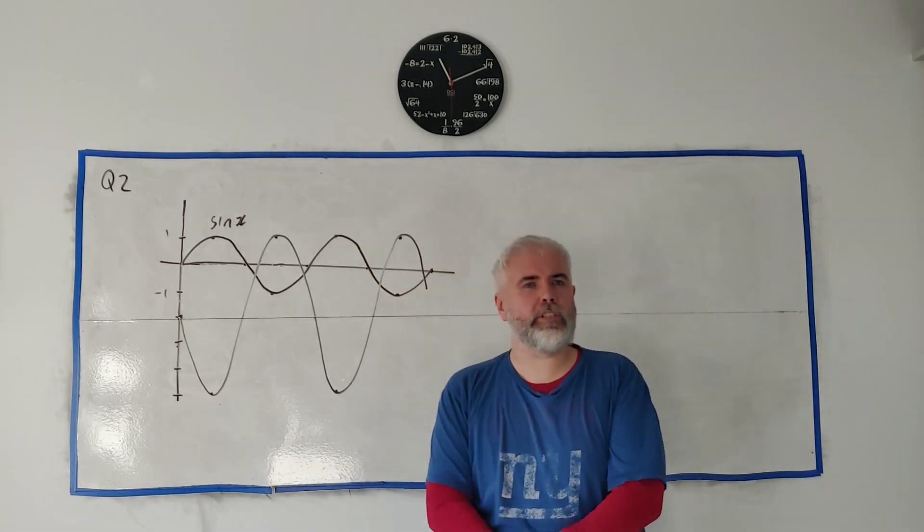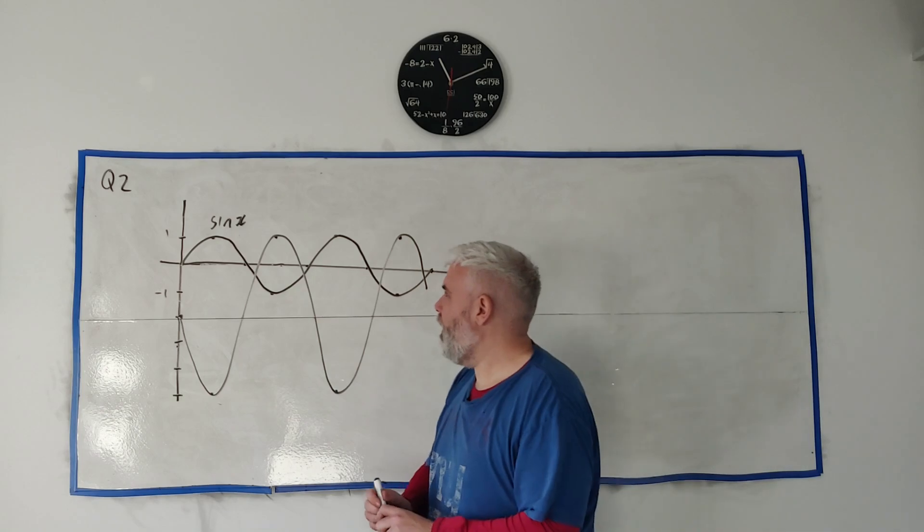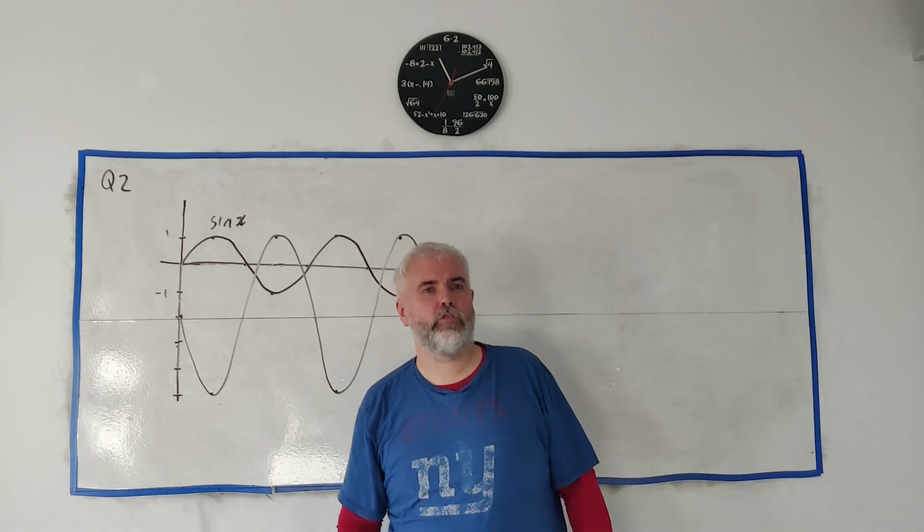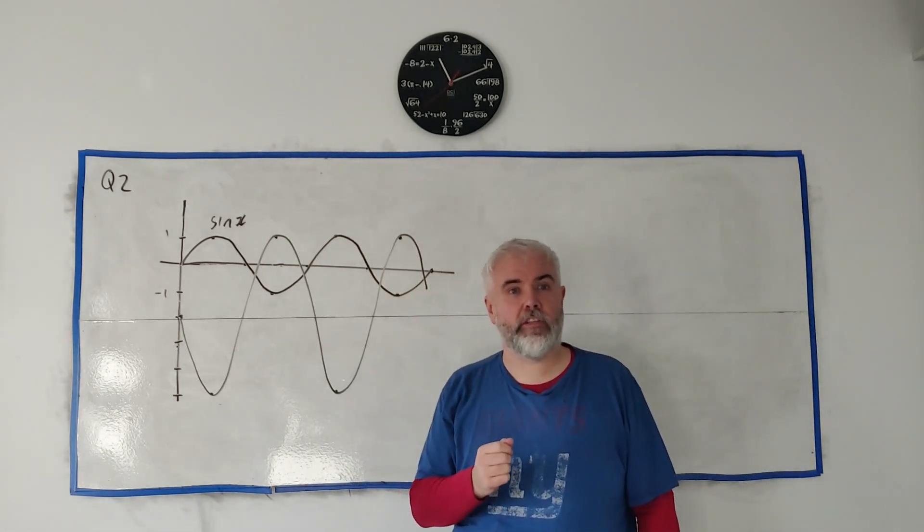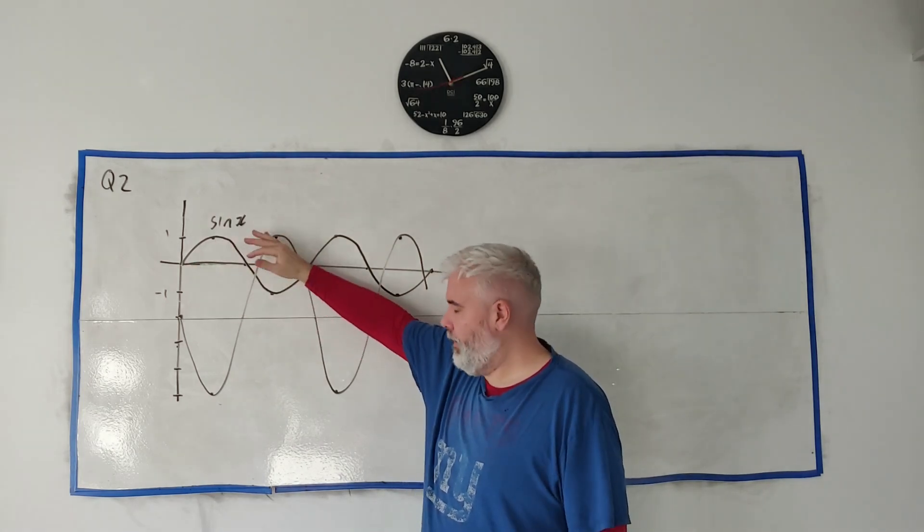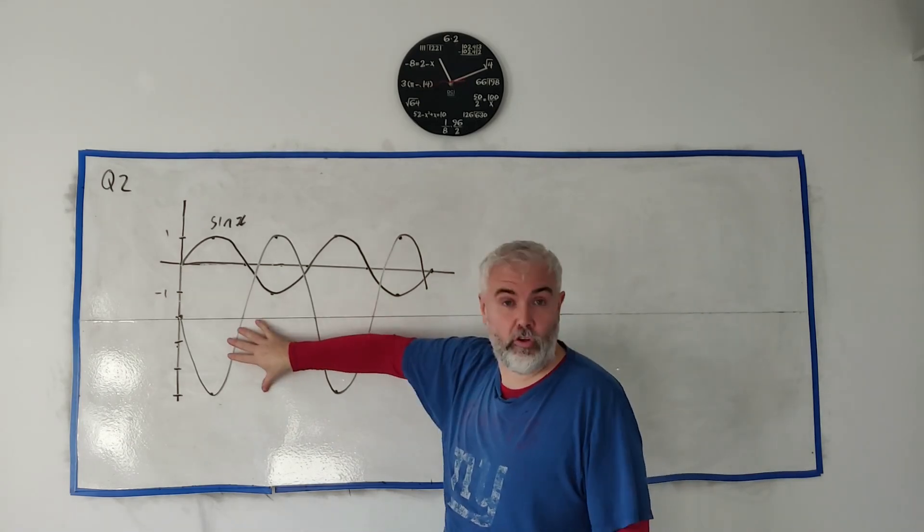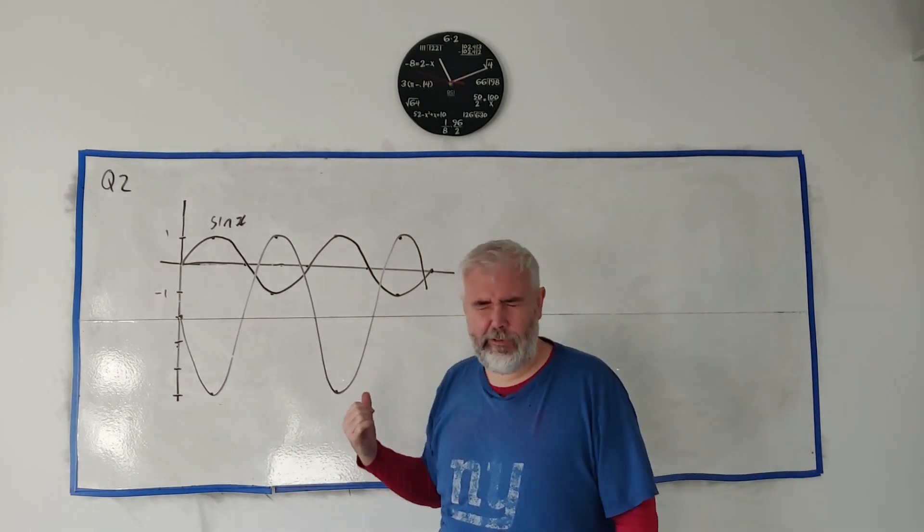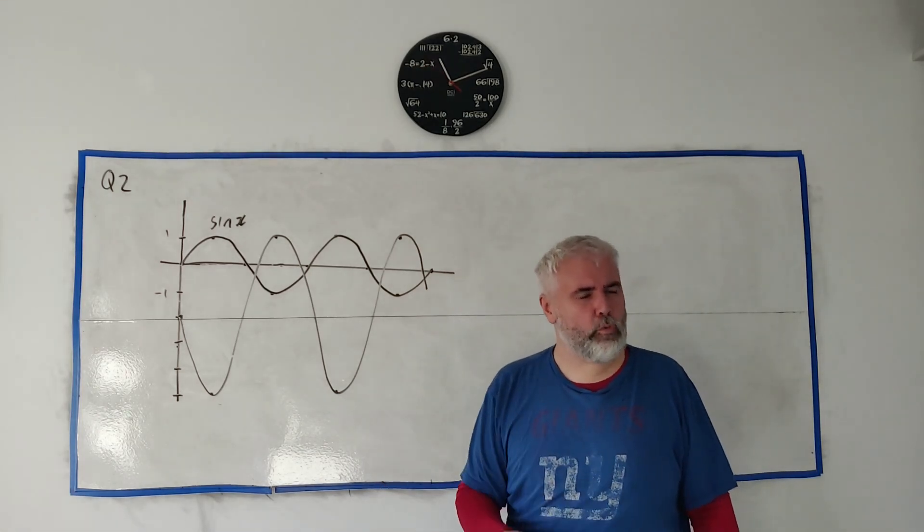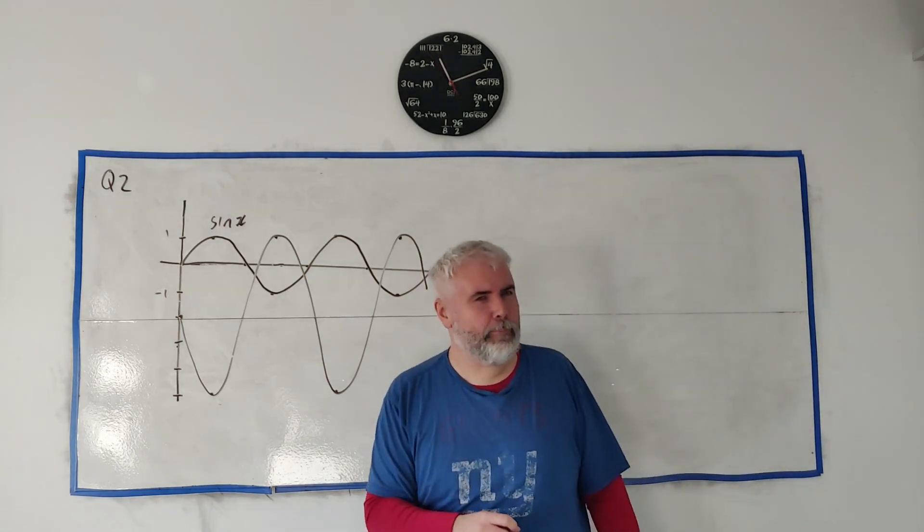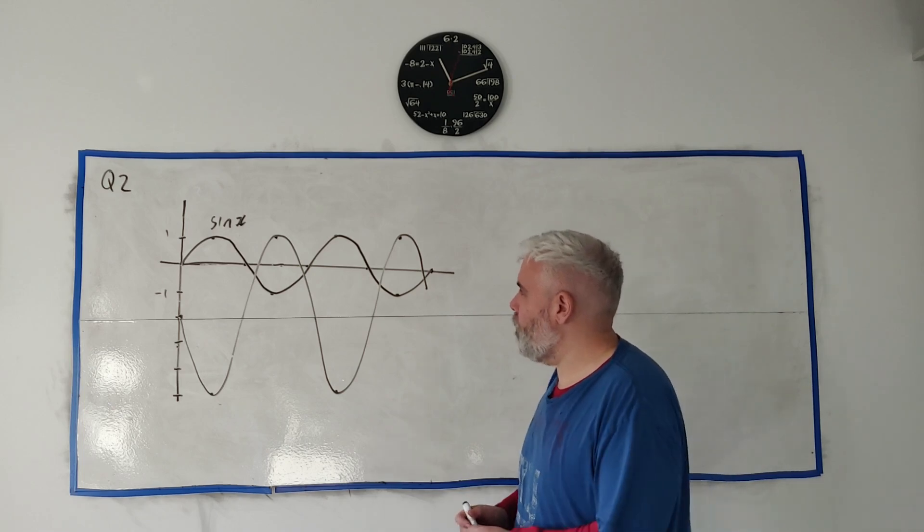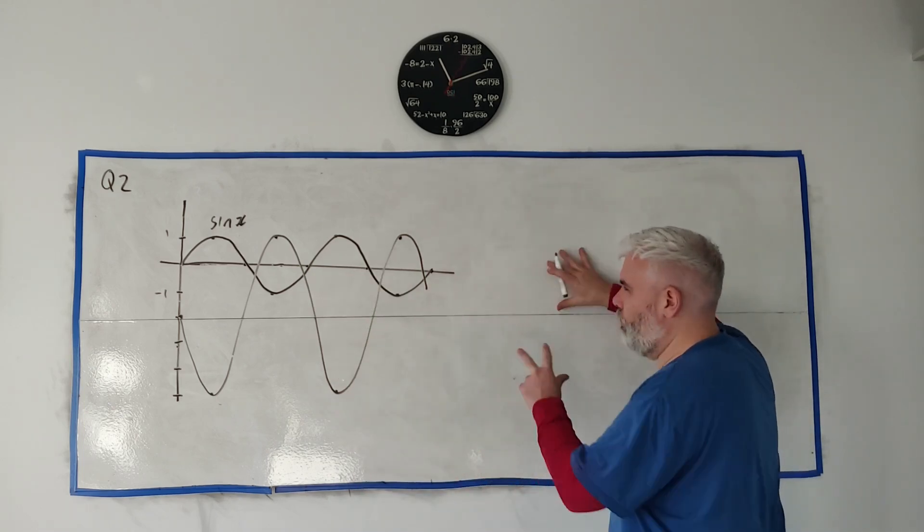In part a, they first tell you that sine x is reflected through the x-axis and they want us to describe the sequence of transformations that would get sine x, after we've reflected it through the x-axis, into this other function. Now to answer this question I would usually go through each of the steps and do it mathematically as well, but that's the answer to part b so I'm going to hold off doing it.